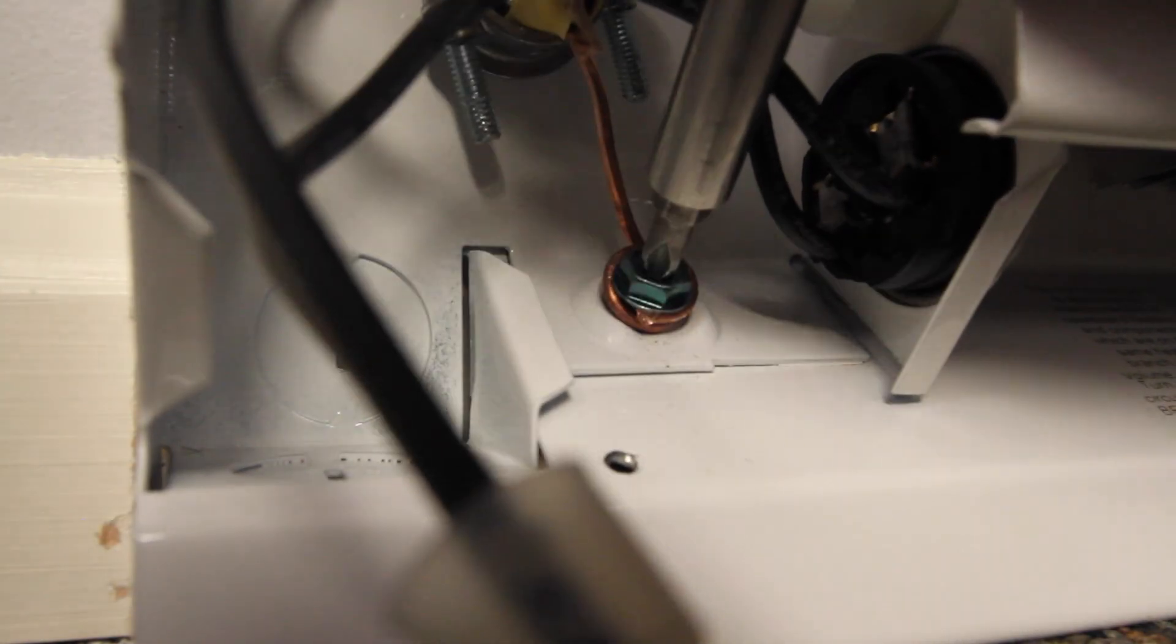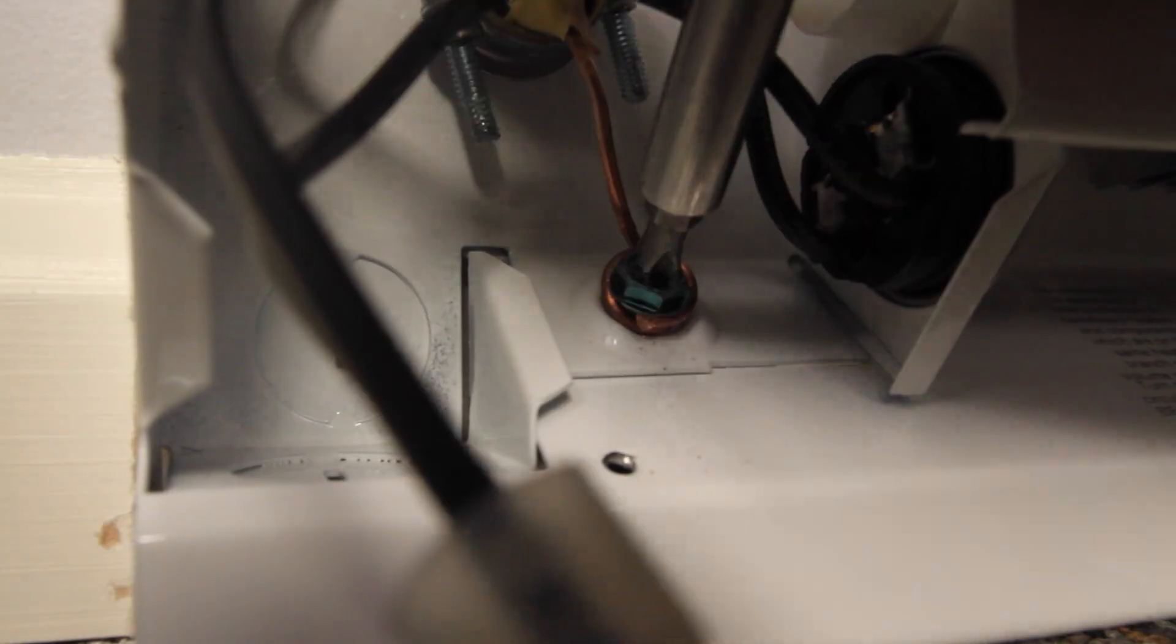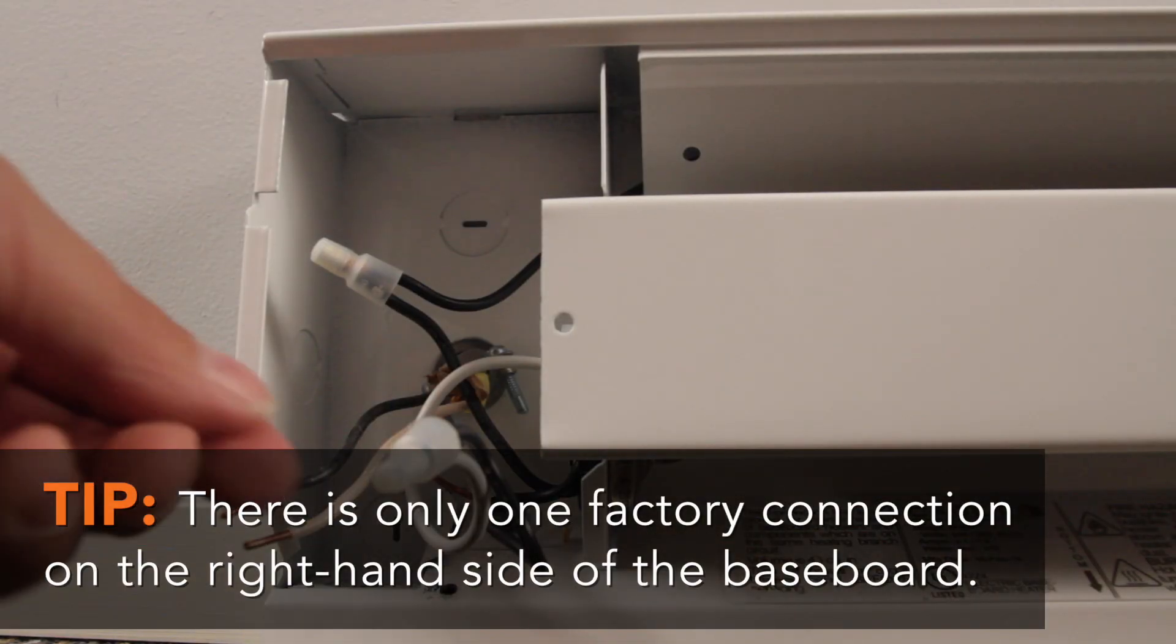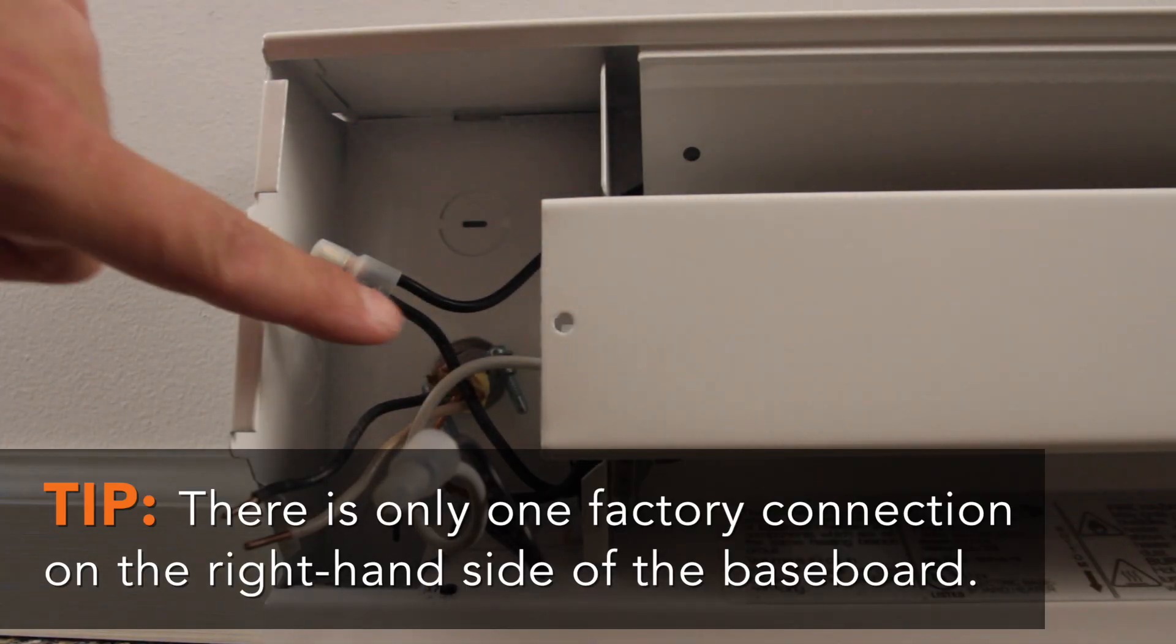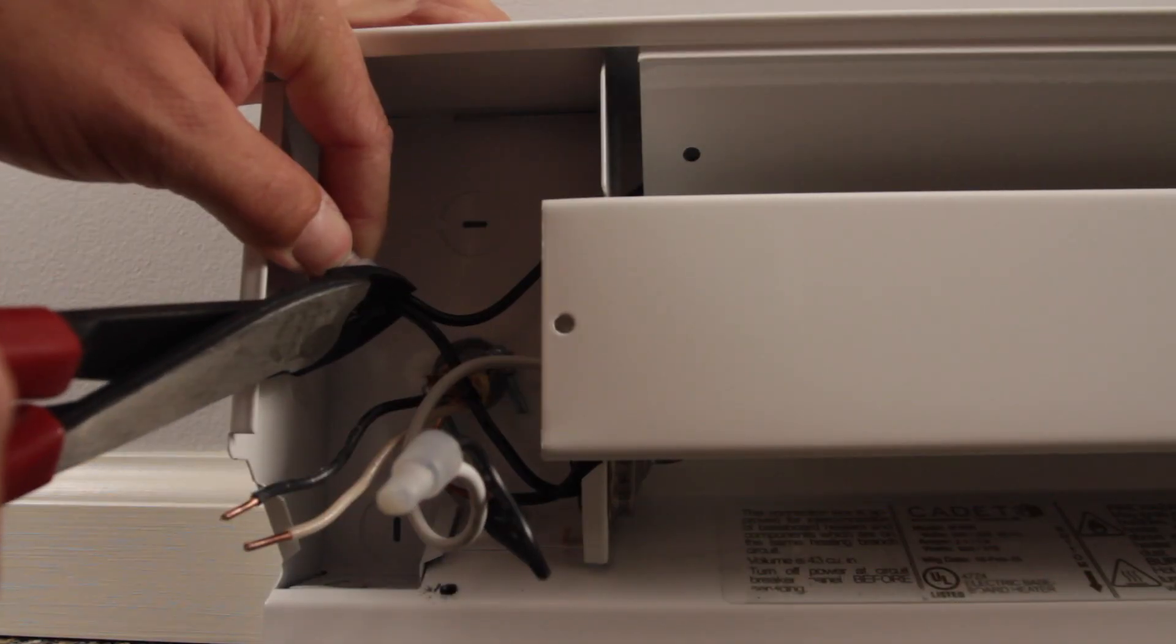If you haven't already done so, attach your bare copper ground wire to the green ground screw. There are two factory connections. Find the one that does not have the white wire. Cut that factory connection.